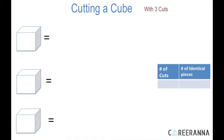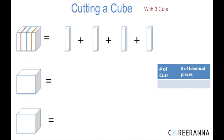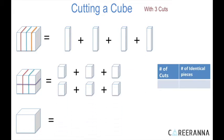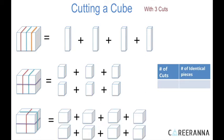Talking about cutting a cube with three cuts: I can put three parallel cuts and get four identical pieces. I can put two parallel cuts to get three pieces and one perpendicular cut, resulting in three into two — that is six pieces. A third way: one cut this way, a second perpendicular to this one giving four pieces, and then a third cut perpendicular to both. This results in four into two — that is eight identical pieces. So with three cuts, we can have a maximum of eight identical pieces.